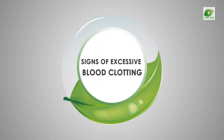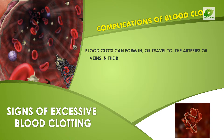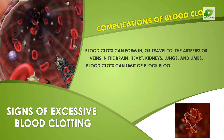Signs of excessive blood clotting — complications of blood clots. Blood clots can form in, or travel to, the arteries or veins in the brain, heart, kidneys, lungs, and limbs. Blood clots can limit or block blood flow.